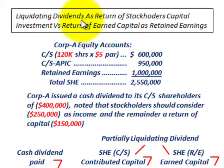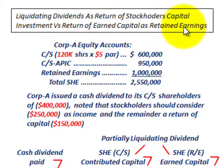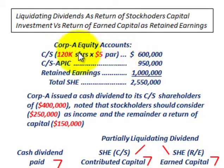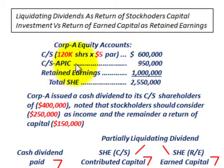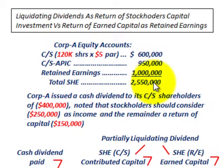We're going to be going over liquidating dividends as a return of stockholders' capital investment versus a return of earned capital as retained earnings. Corporation A has these equity accounts: common stock, 120,000 shares at $5 par for $600,000, additional paid-in capital to common stock of $950,000, and retained earnings of $1,000,000. Their total stockholders' equity is $2,550,000.